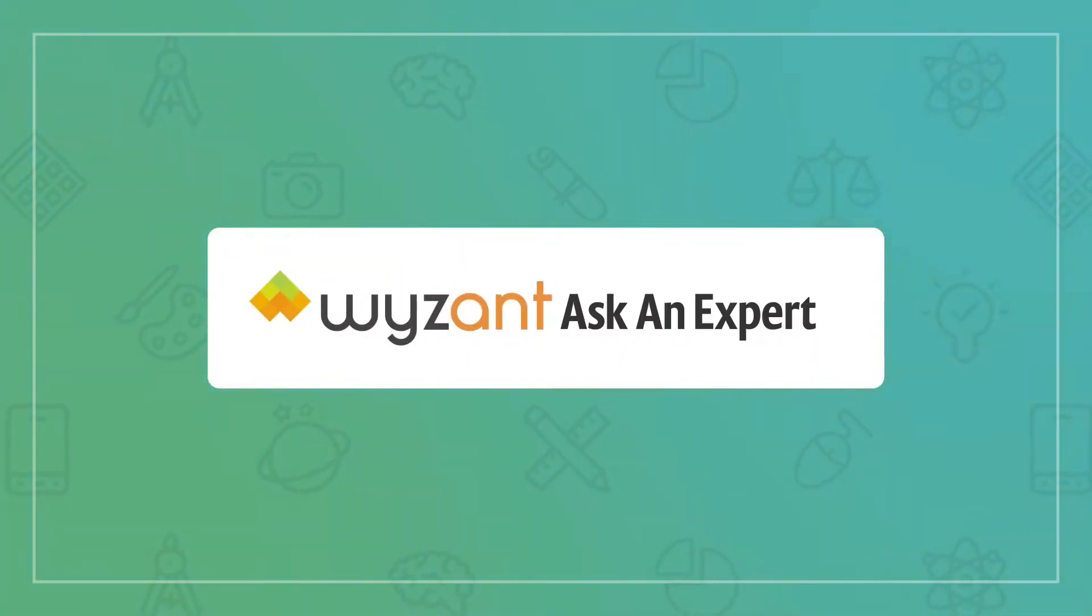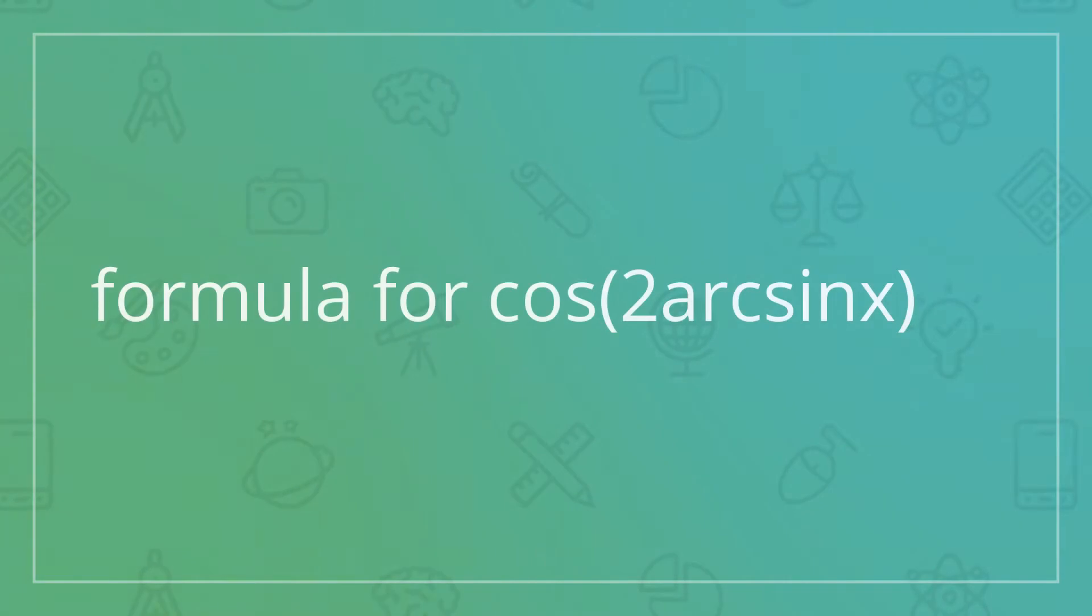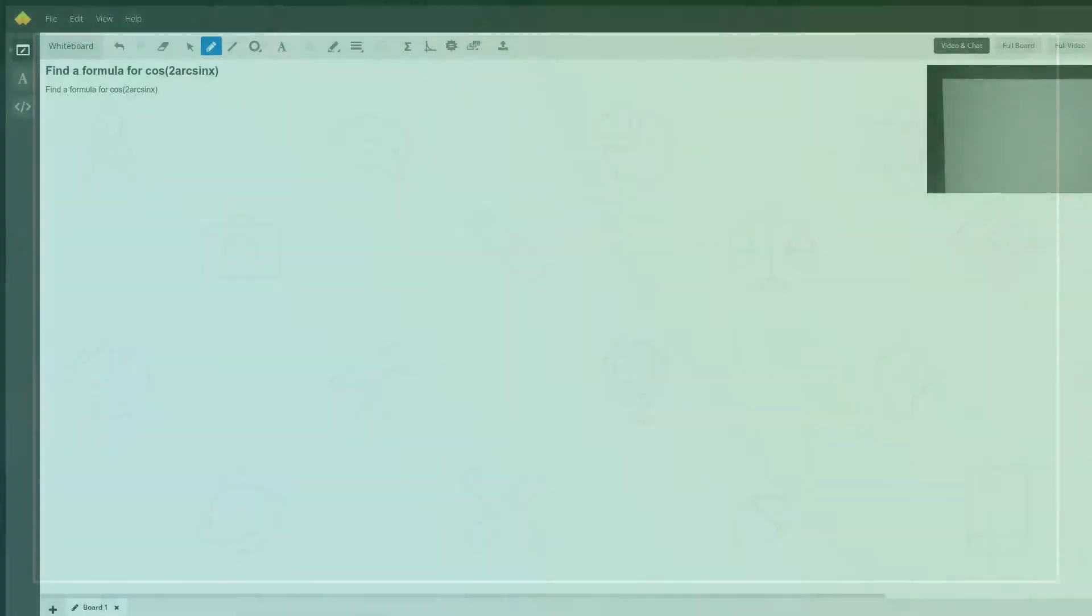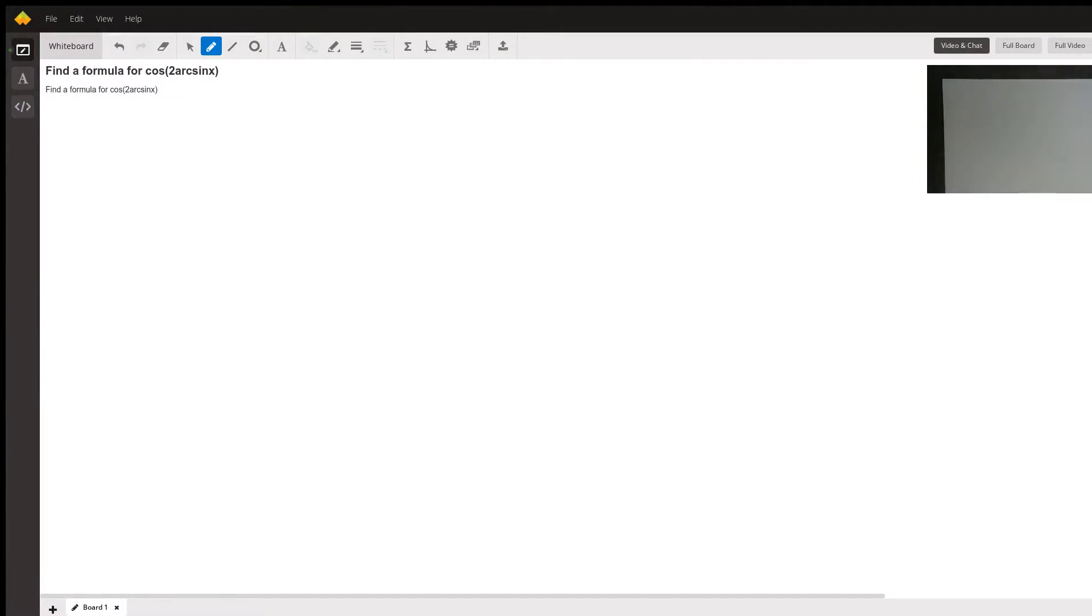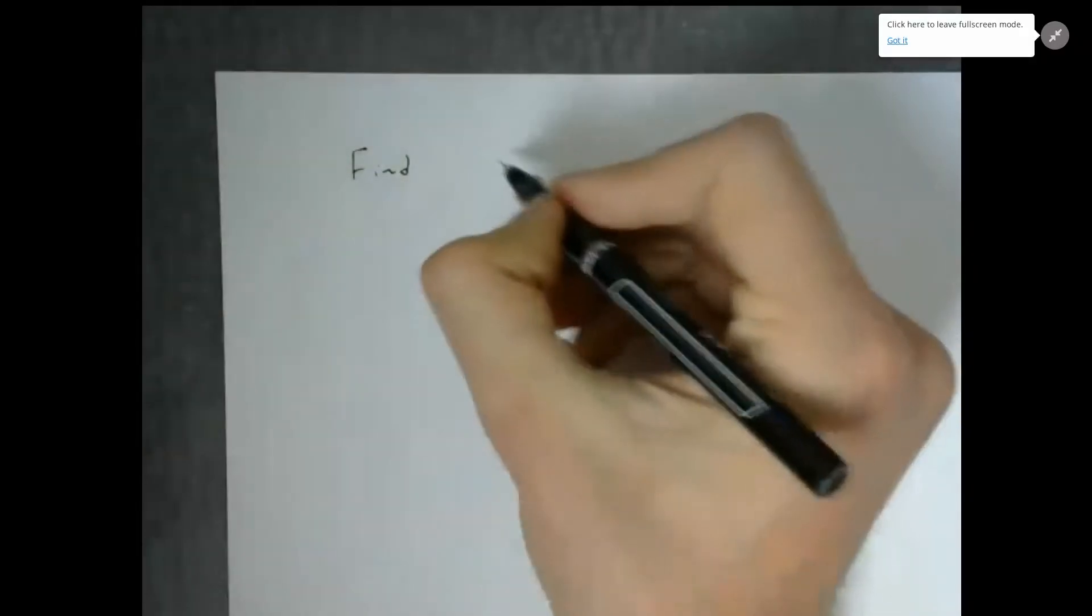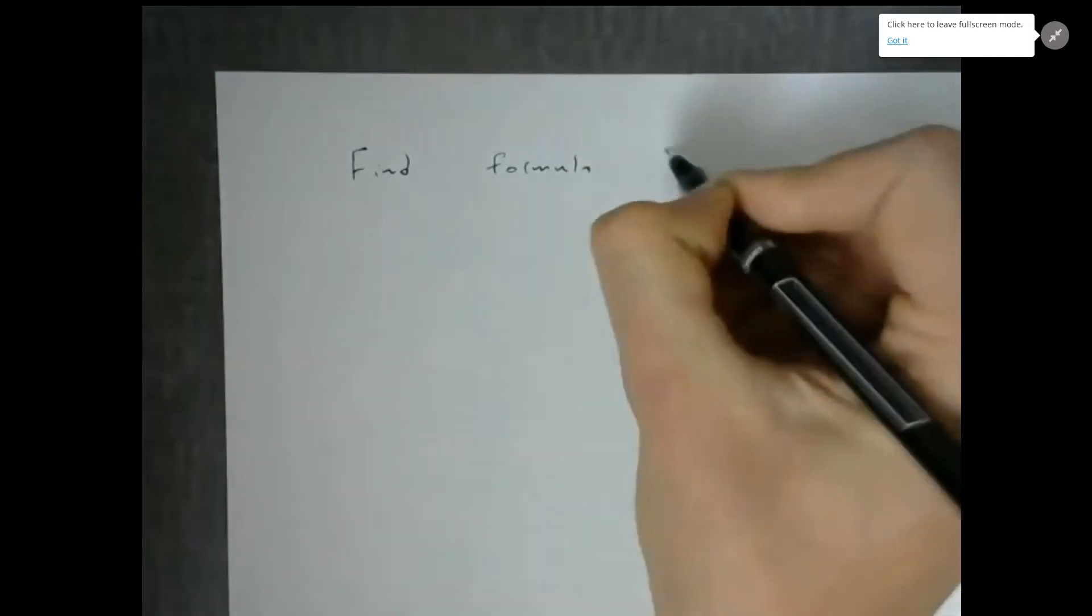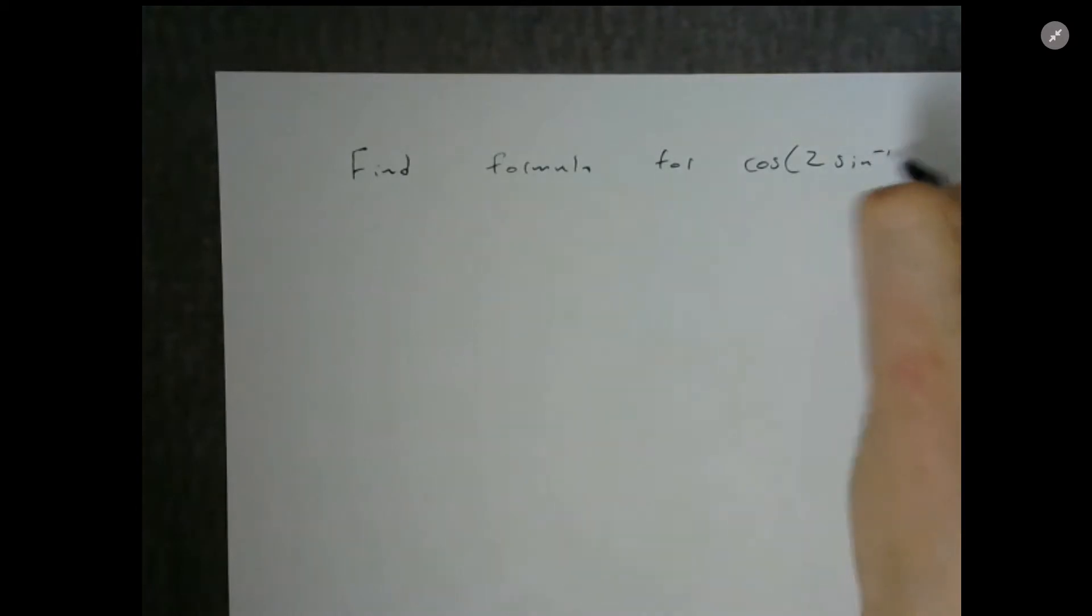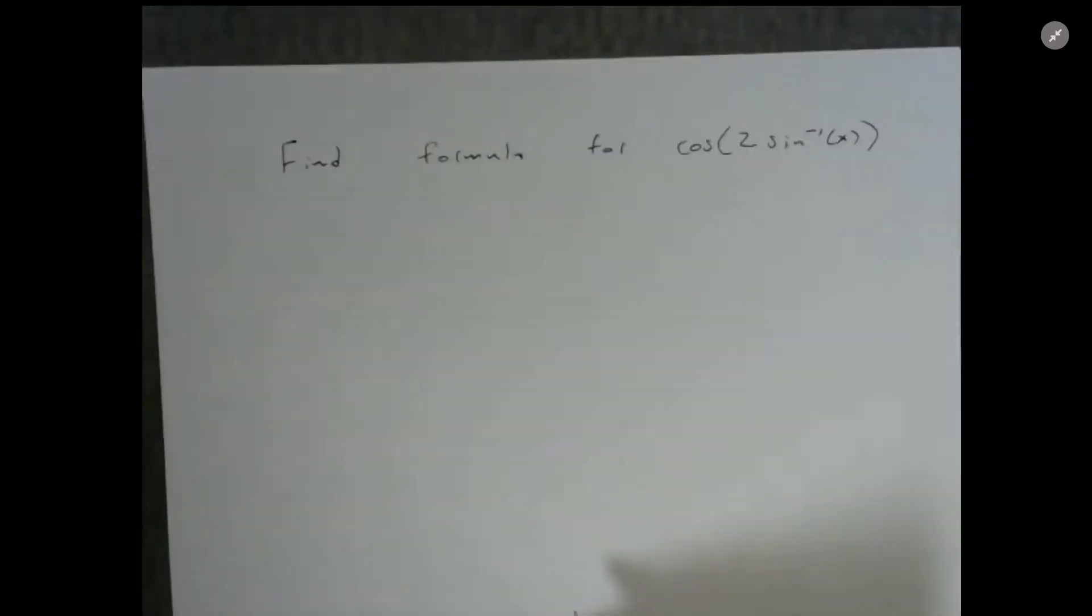All right, so today I want to answer this question: find a formula for cosine of two arcsine of x. This is what we want to do. So how can we simplify this?